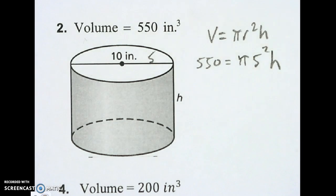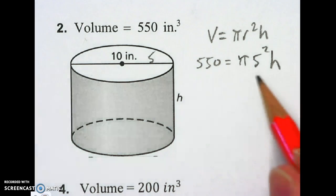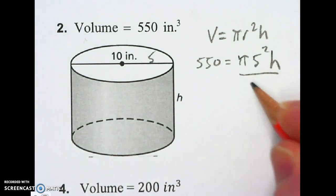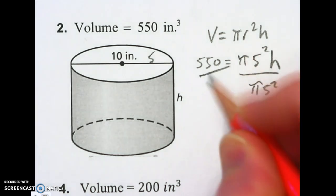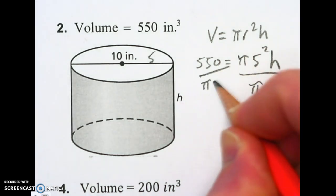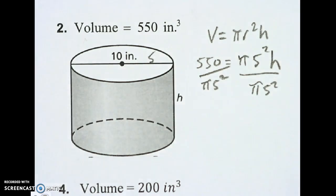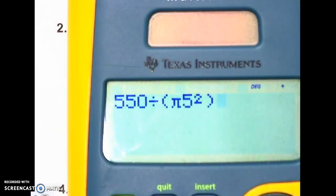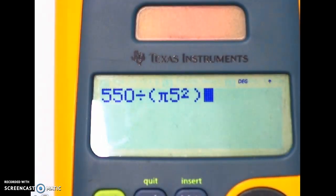I don't know the height, so I have one step I need to do. I need to divide off the pi and the 5 squared — that's multiplying by h — so I also divide that on the other side: pi and 5 squared. When typing this in, you need to be careful — you've got to use parentheses. You need to make sure you use parentheses when you type it in, otherwise it'll come up with something weird.